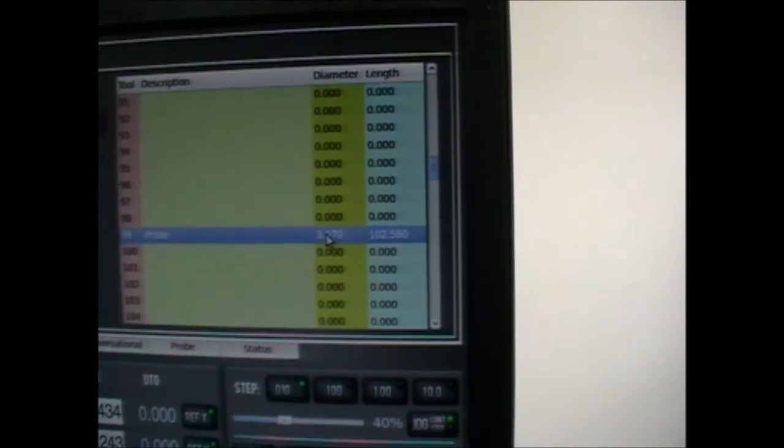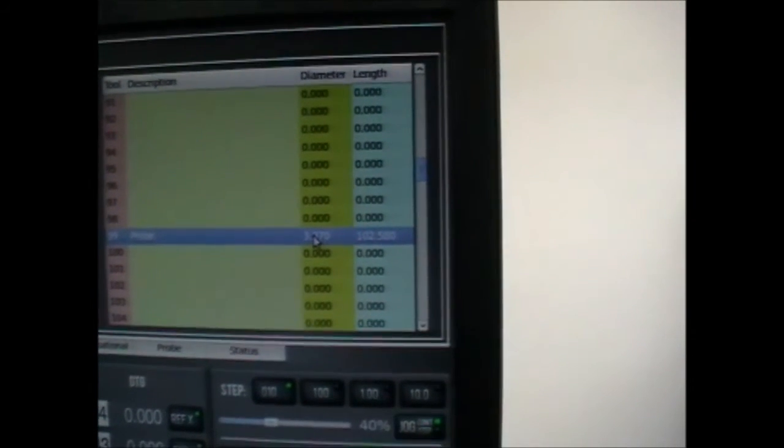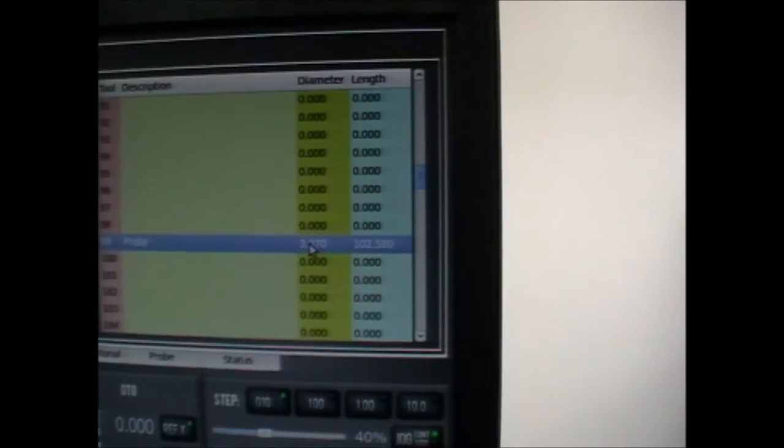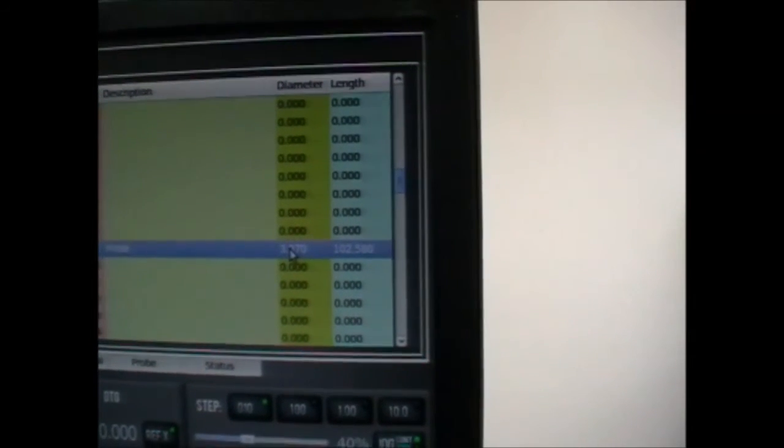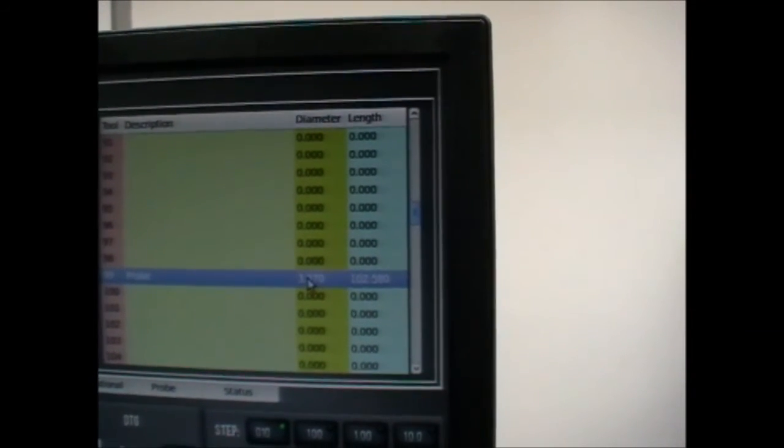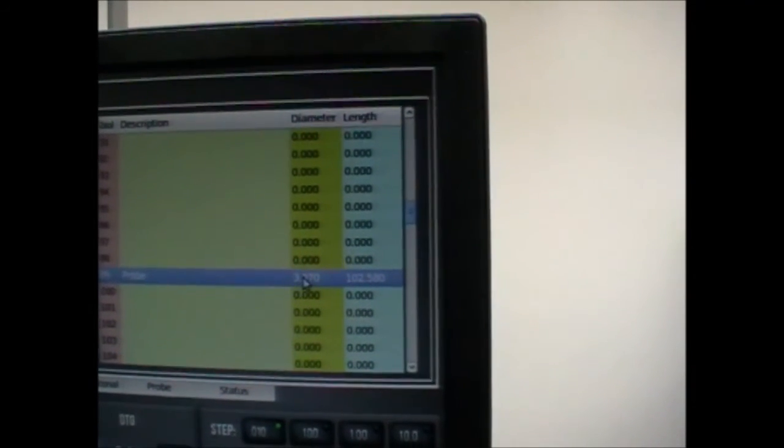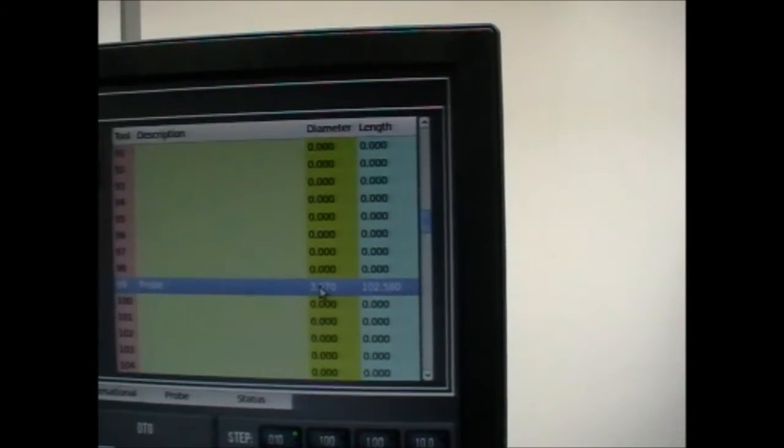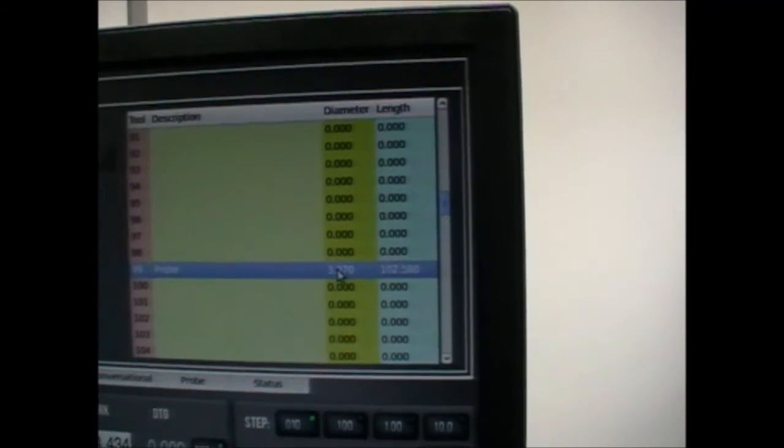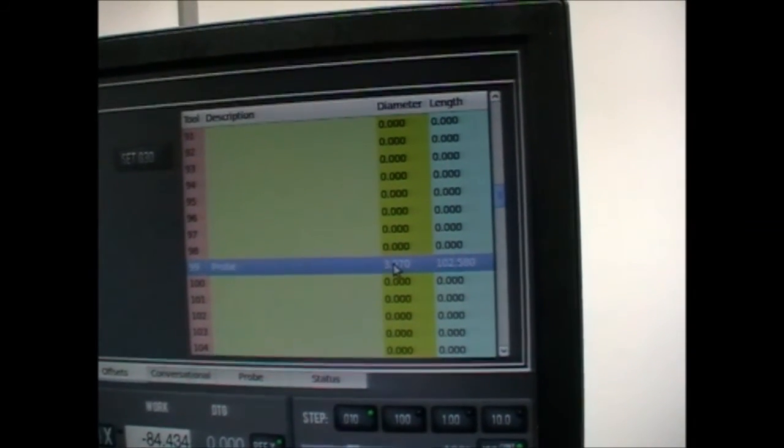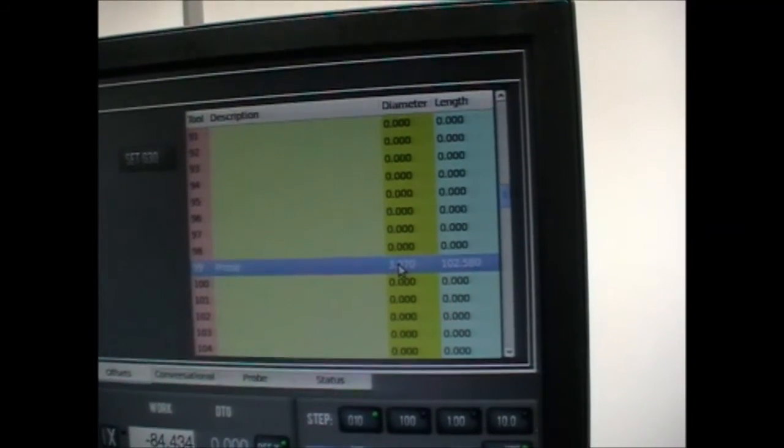Well, you can't do that because it's different in one direction than the other. If you took the error in one direction of two thou and reduced that off the radius of the diameter, that would correct it in one direction, but it's four thou in the other direction. So it's impossible with this type of probe to work more accurately than about two thou, and that is a problem for precision work.